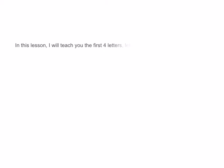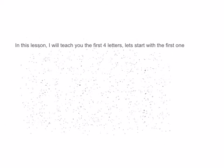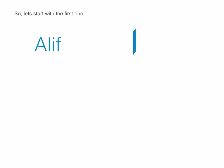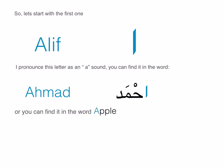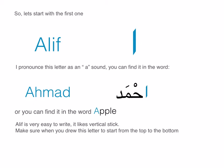So in this lesson, I will teach you the first four letters. Let's start with the first one: Alif. I pronounce this letter as an A sound, and you can find it in the word 'Ahmed' — a famous Arabic name — or in the word 'Alif' itself. Alif is very easy to write; it looks like a vertical stick. Make sure when you draw this letter to start from the top to the bottom.